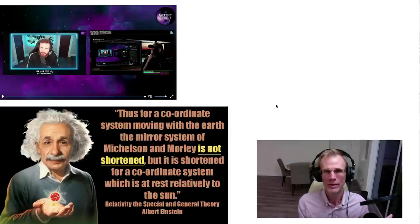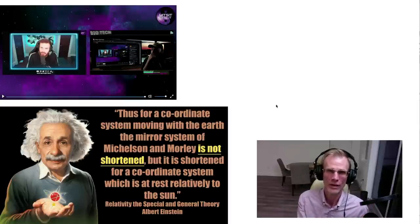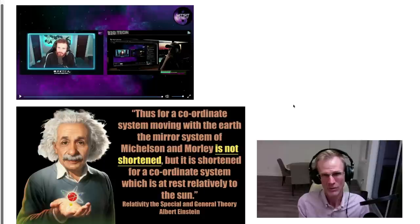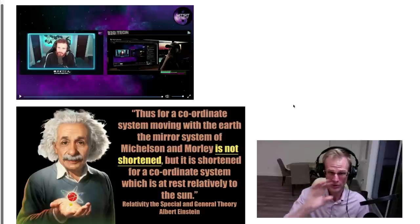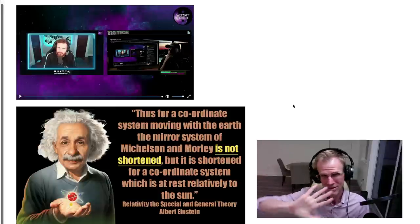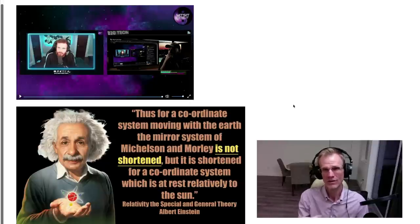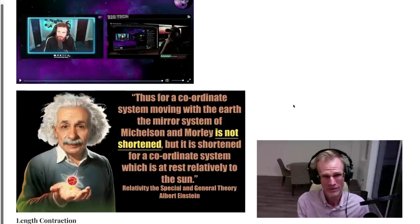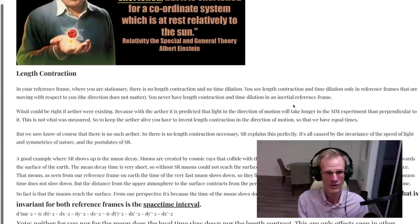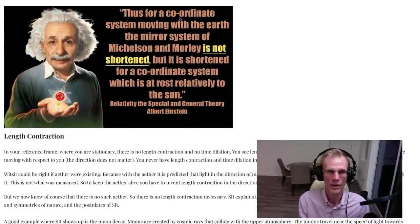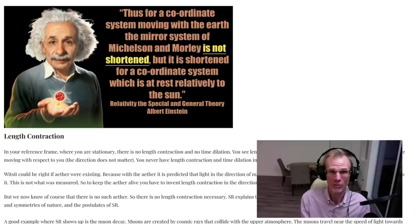All Neo-Lorentzian models don't work in general relativity, where special relativity has a nice smooth transition. It's just fringe science that doesn't work. Interestingly, this quote is right from the chapter he keeps reading: 'For a coordinate system moving with the Earth, the mirror system of Michelson-Morley is not shortened. But it is shortened for a coordinate system at rest relative to the Sun.' So what Einstein is saying is: if you were sitting on the Sun and the Earth was going by, you would see the Michelson-Morley apparatus shrink — by just that amount I showed at the beginning of the video.